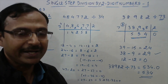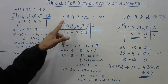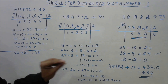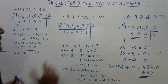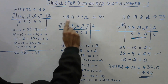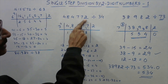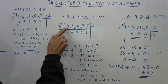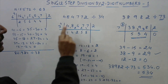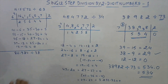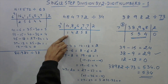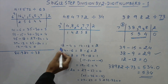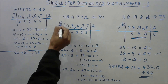Let's see another question: 484772 divided by 34. Try to understand this very logically so that you feel comfortable. 34 means 3 is written here and 4 is separated out. Likewise, one digit is separated out from the right-hand side of the dividend. The remaining digits 48477 form the dividend part. 3 × 1 = 3, so 4 minus 3 = 1, and I have written 1 here as the first quotient digit.